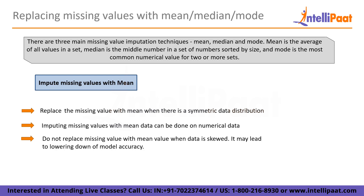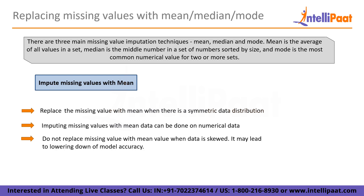A statistical approach to deal with missing values is to replace them using these approximations. When imputing missing values by mean, first replace the missing value with mean when there is a symmetric data distribution. Imputing with mean can be done on numerical data, but do not replace missing values with mean when data is skewed, as it may reduce model accuracy. For imputing with median, it is good to replace missing values with median when data is skewed, and this can only be done on numerical data. When imputing by mode, it is good to replace missing values with mode when data is skewed, and mode imputation can be done on both categorical and numerical data.